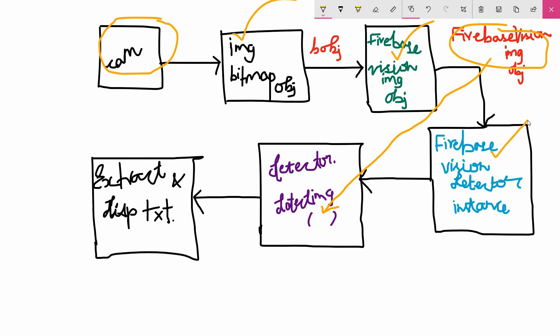Then we're going to call an instance of the FirebaseVisionTextDetector. Once we have that instance, we're going to use its object to call a method called DetectInImage, which plays a major role in extracting text from the image. We're then going to attach two event listeners: one is onSuccessListener and the other is onFailureListener.